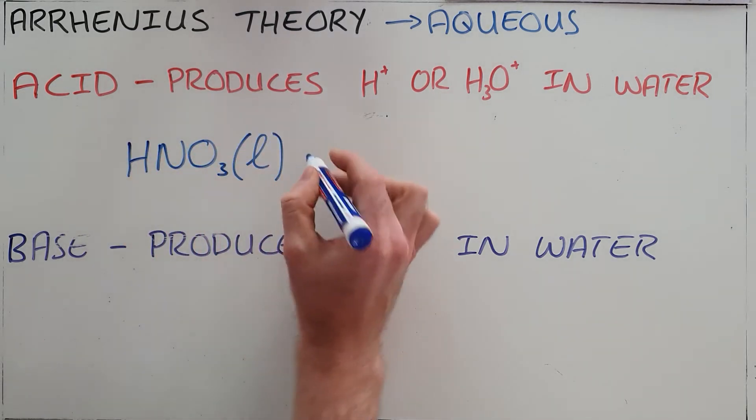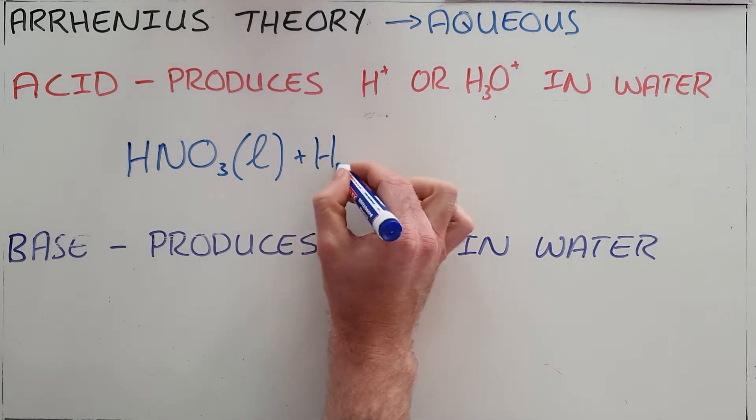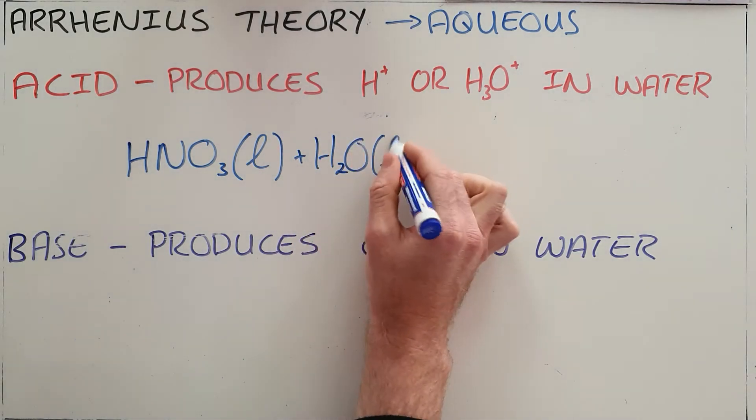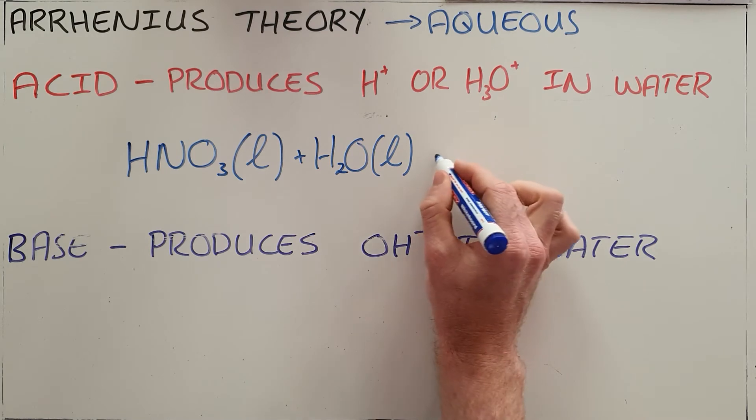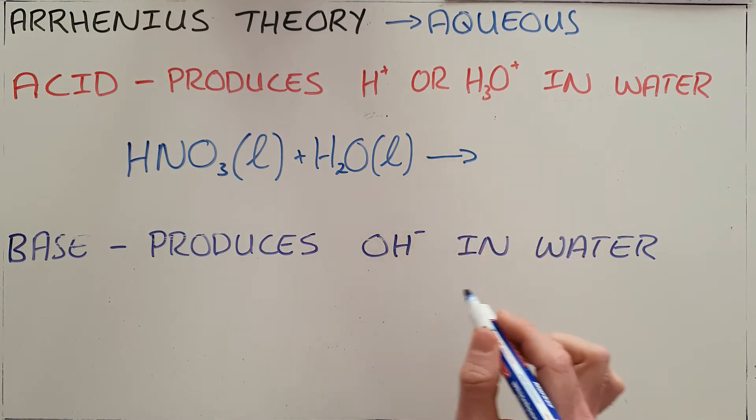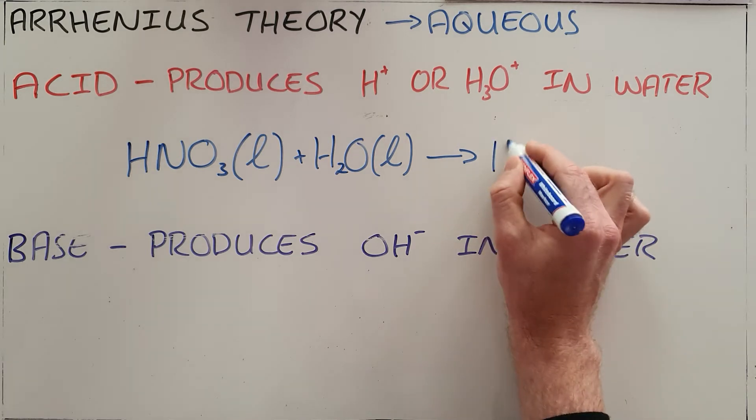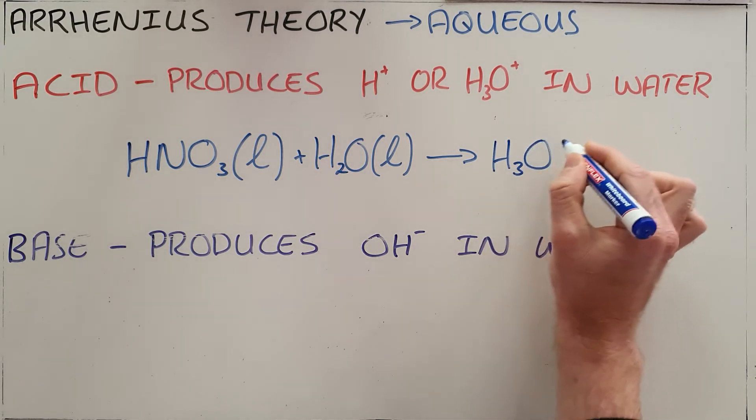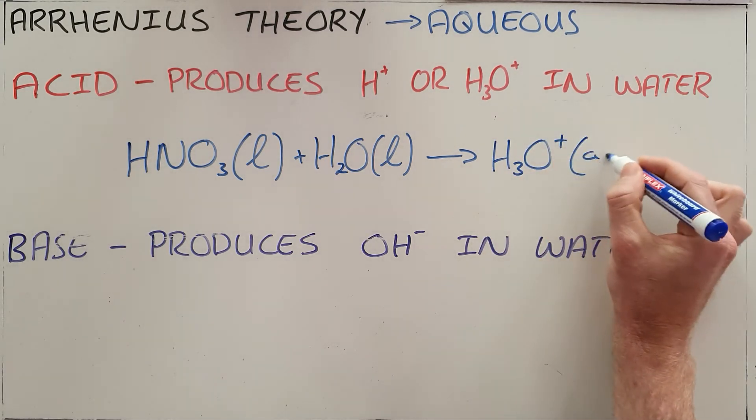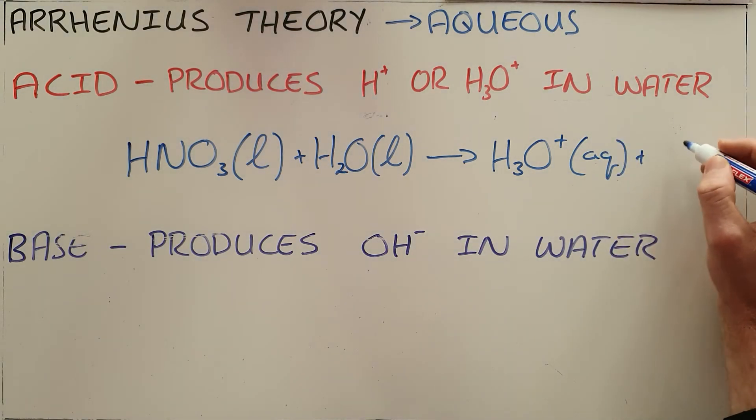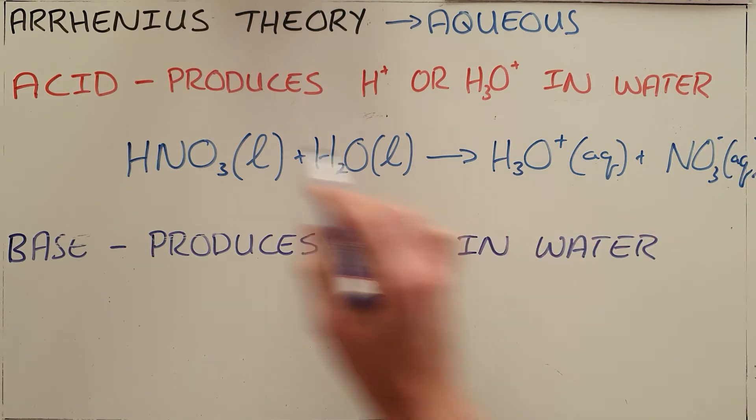We start here with nitric acid. It reacts with water in a two-step process. We know the first step is dissociation and the second step is then the reaction with water. But ultimately the result is that we form aqueous hydronium ions and nitrate ions in solution.